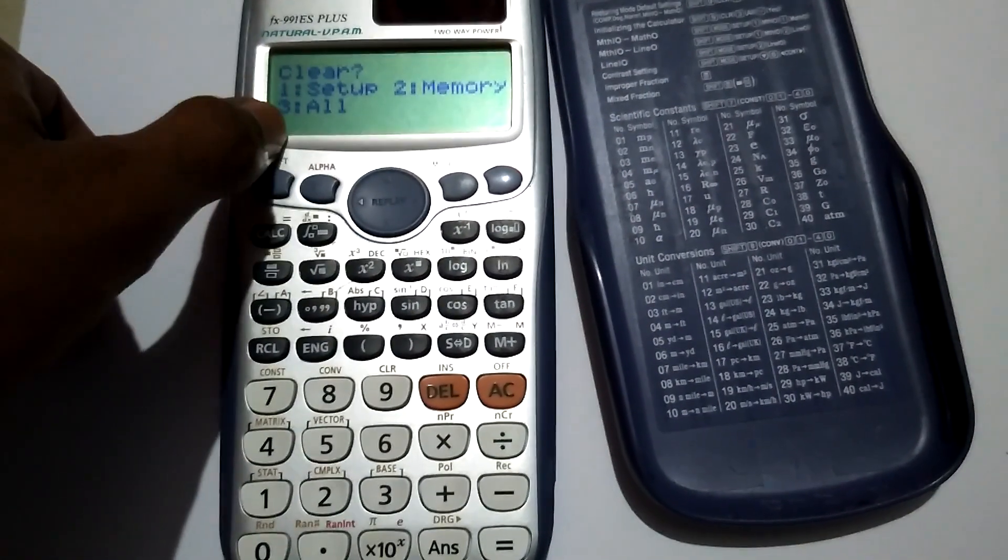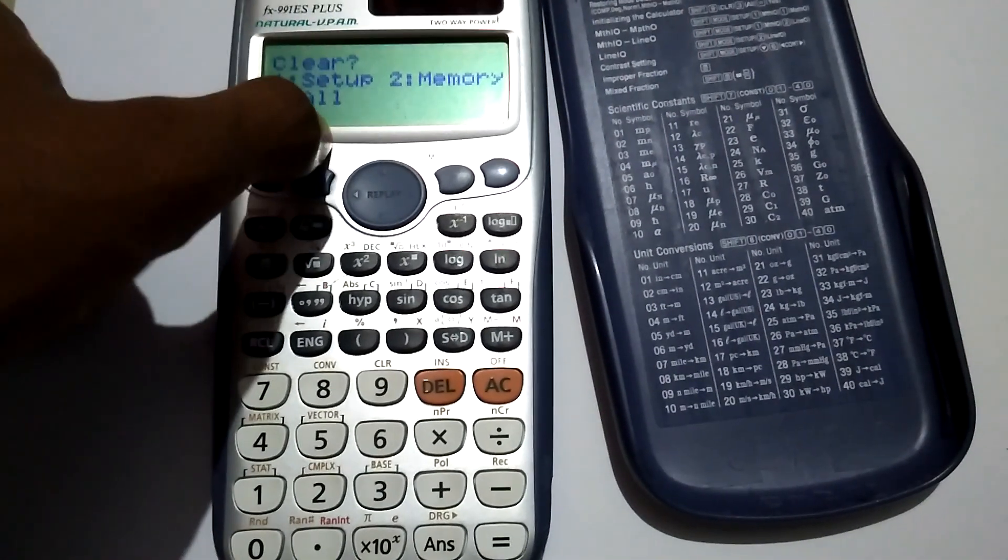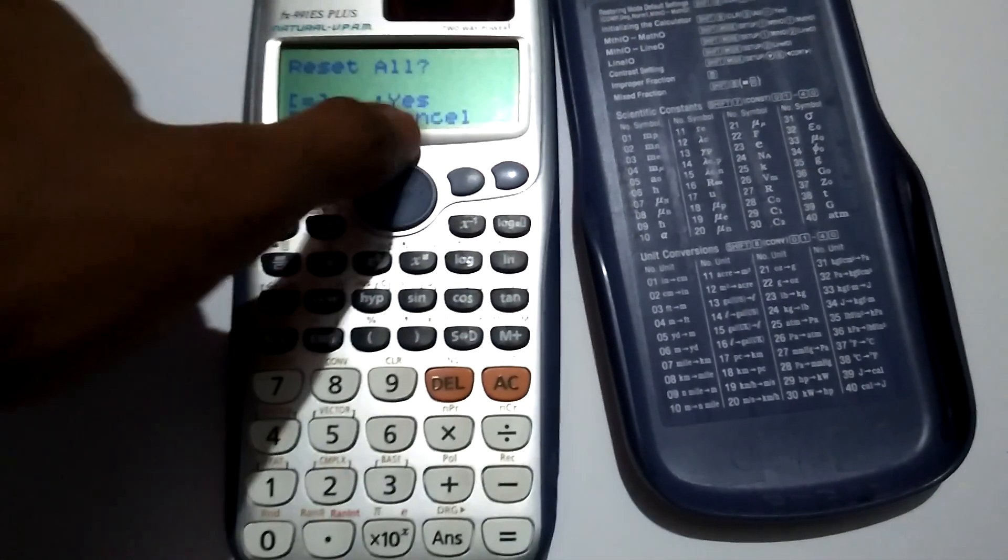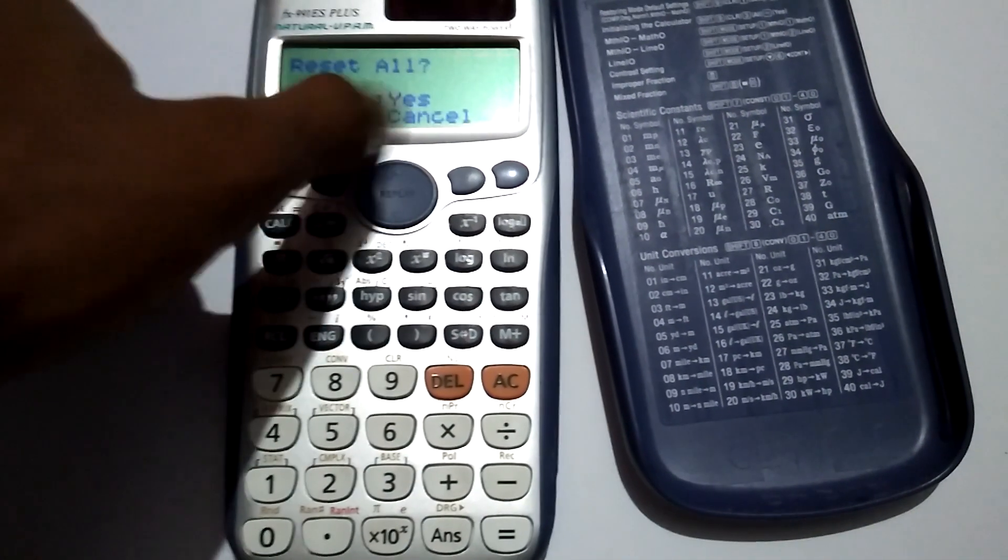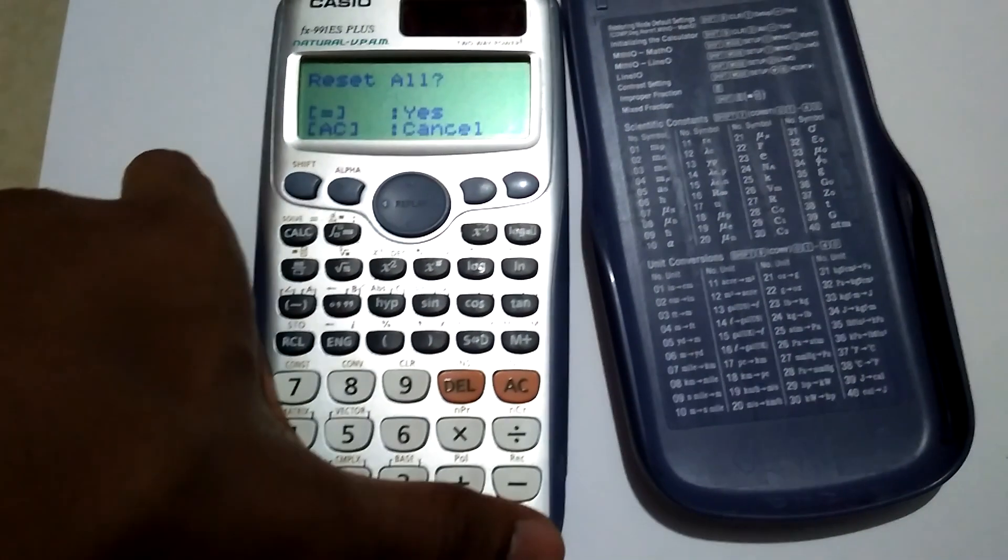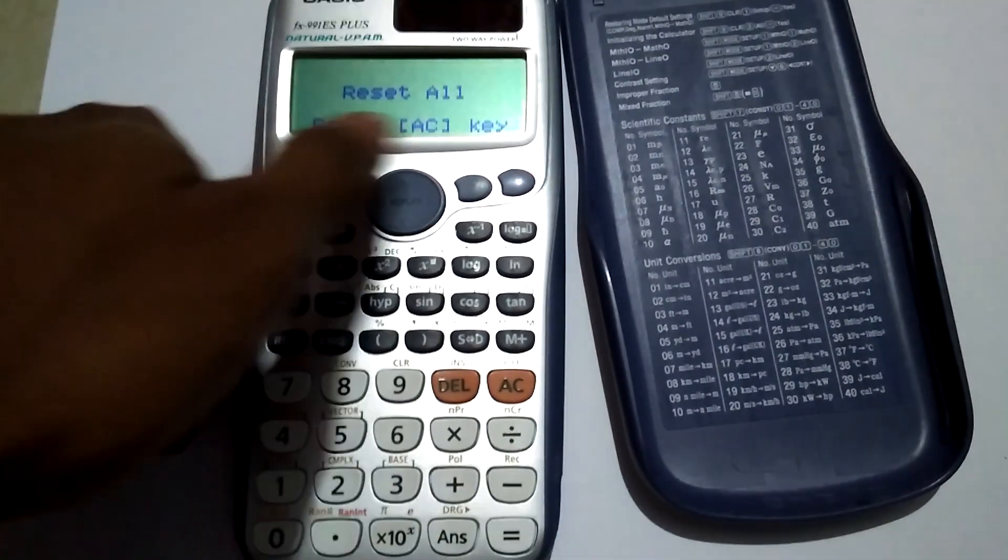As you see here the menu shows: All, Clear All, Setup Only, Memory Only, All. Click on 3 for All, then press equals. It shows Reset All - for Yes press equals, then press AC.